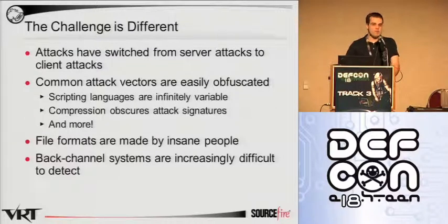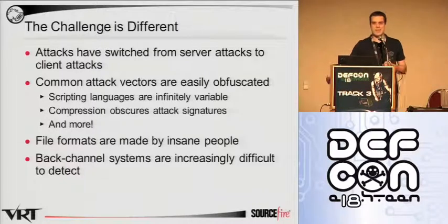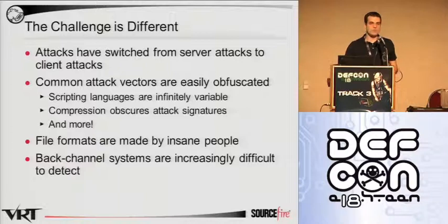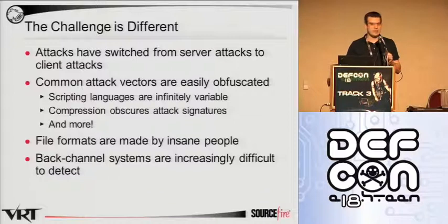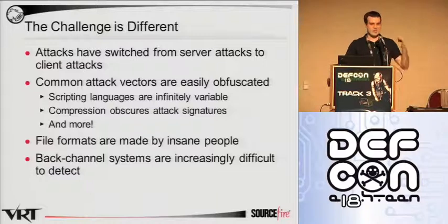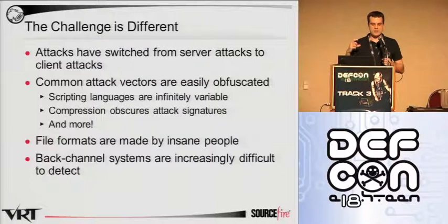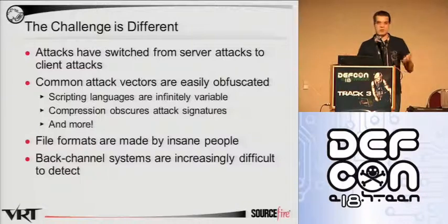For a format-aware detection engine to get to the part of a file it's interested in, it must mimic at least in part the parsing capabilities of the software program itself. For example, say you're parsing through an Office document and you know there's a vulnerability in a specific table. The offset of that table may be found in another header at a completely different part of the file. Your detection software has to first parse up to that header, extract the offset, collect enough of the file to reach where that offset points, and then examine a field in that table and compare it against a fixed value or some other field in the file.